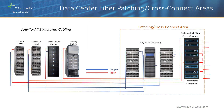Increasing data center fiber counts require enhanced Layer 0 management capabilities to keep pace. All fiber connections arrive into a central automated cross-connect area, allowing any piece of equipment requiring a fiber connection to be connected to any other fiber-based equipment port. For instance, if a switch requires a fiber connection for a storage area network on day one but needs to be changed to a different fiber switch connection at a later date, all that is required is a software command at the central robotic cross-connect area.